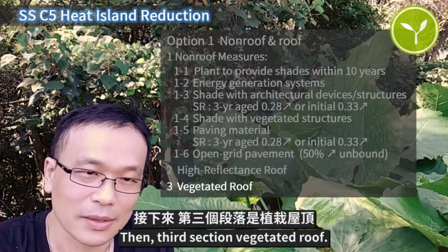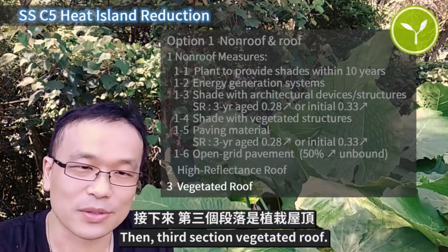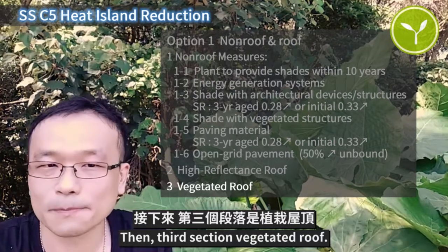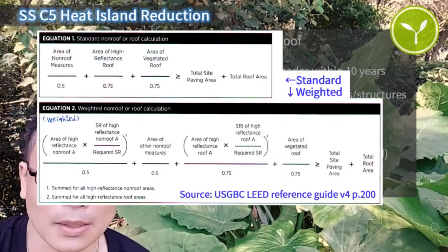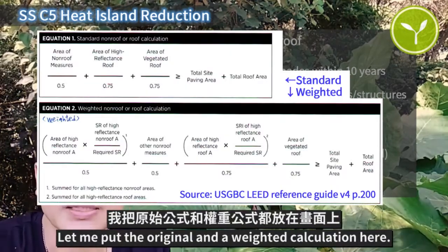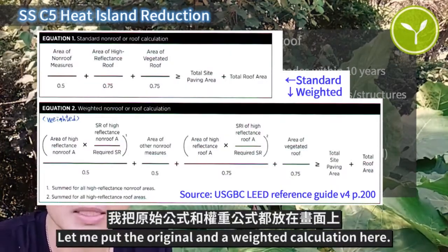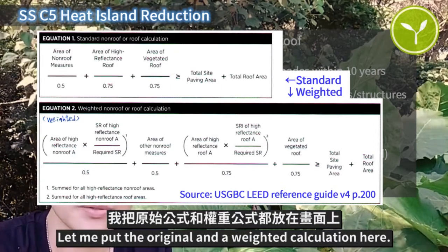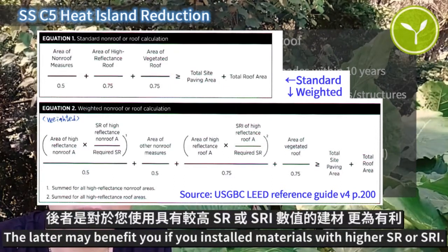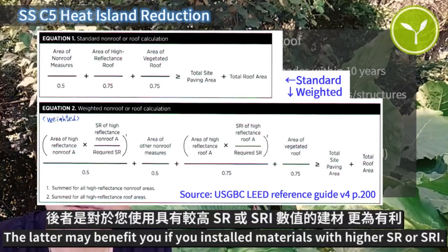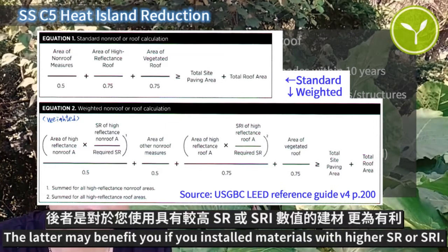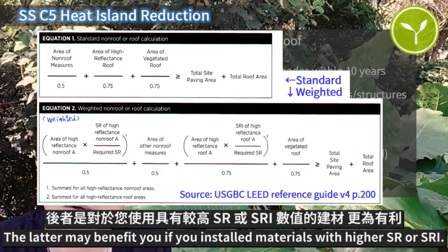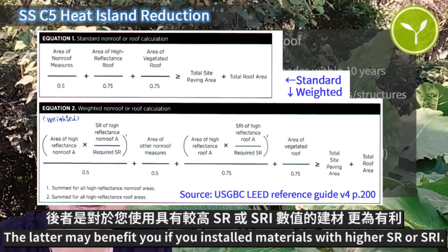The third section is vegetated roof. Let me put the original and the weighted calculation here. The weighted calculation may benefit you if you install materials with higher SR or SRI.